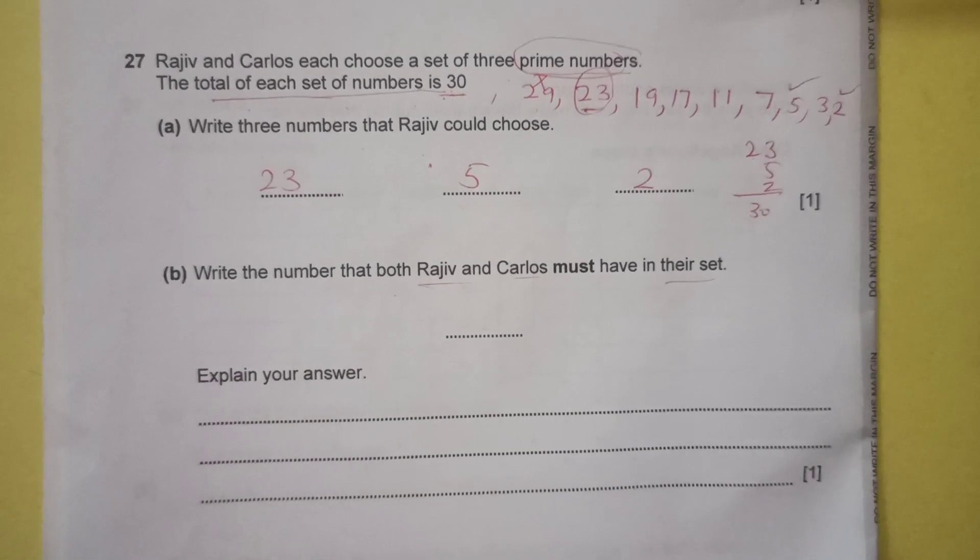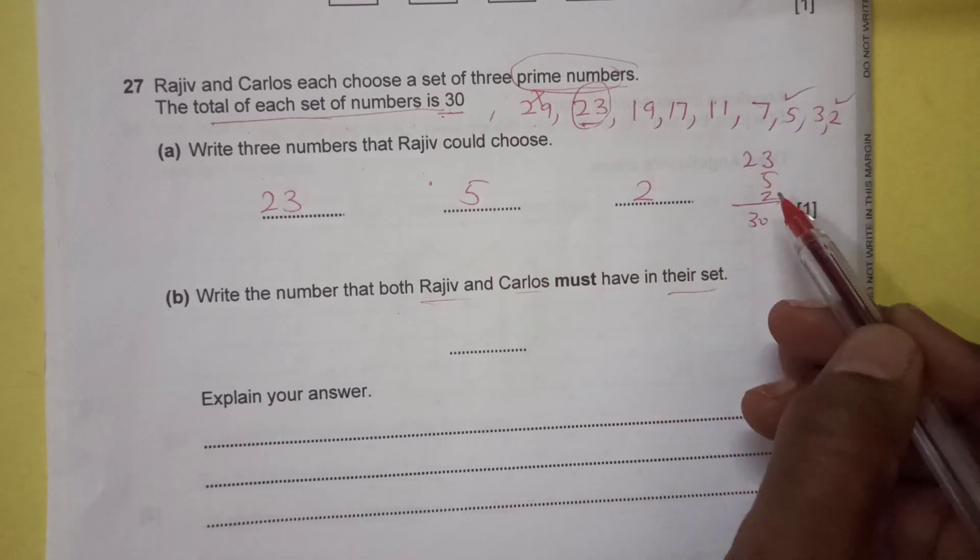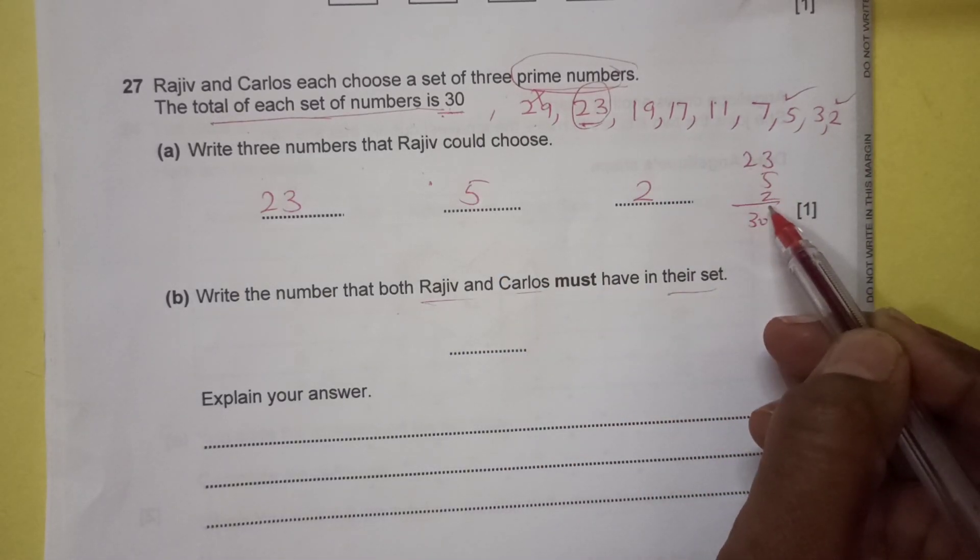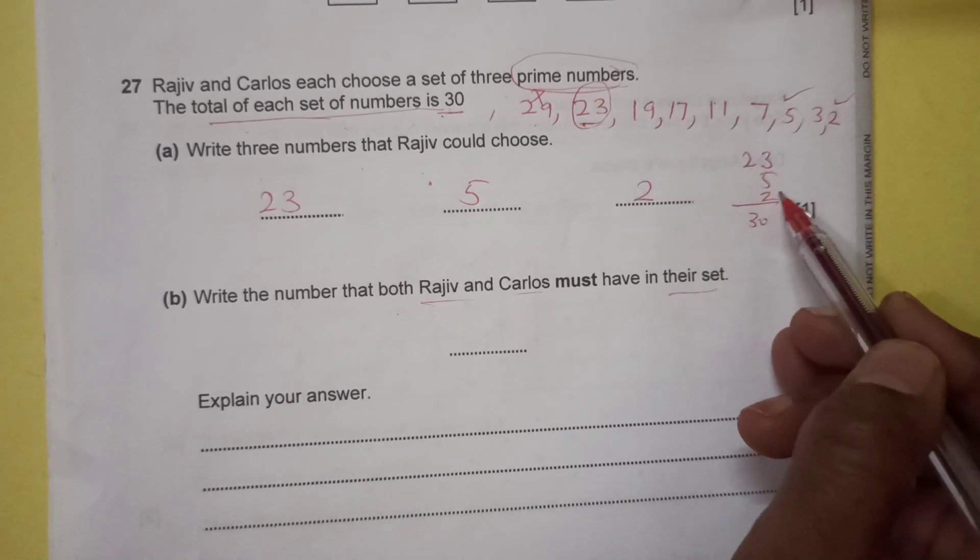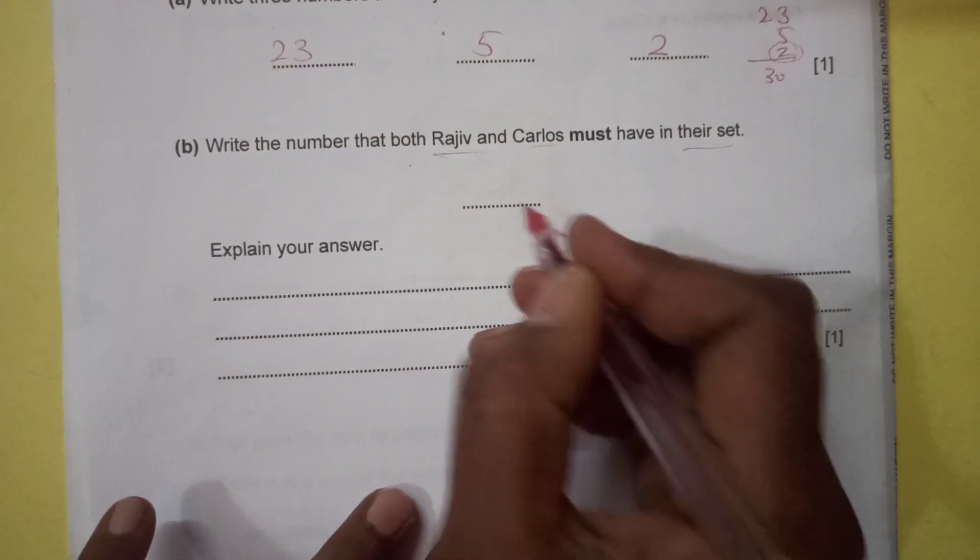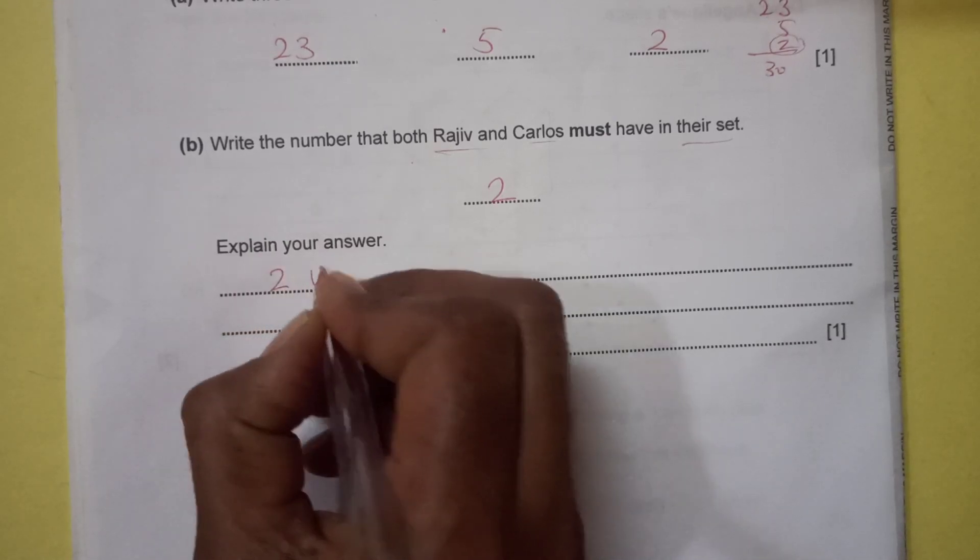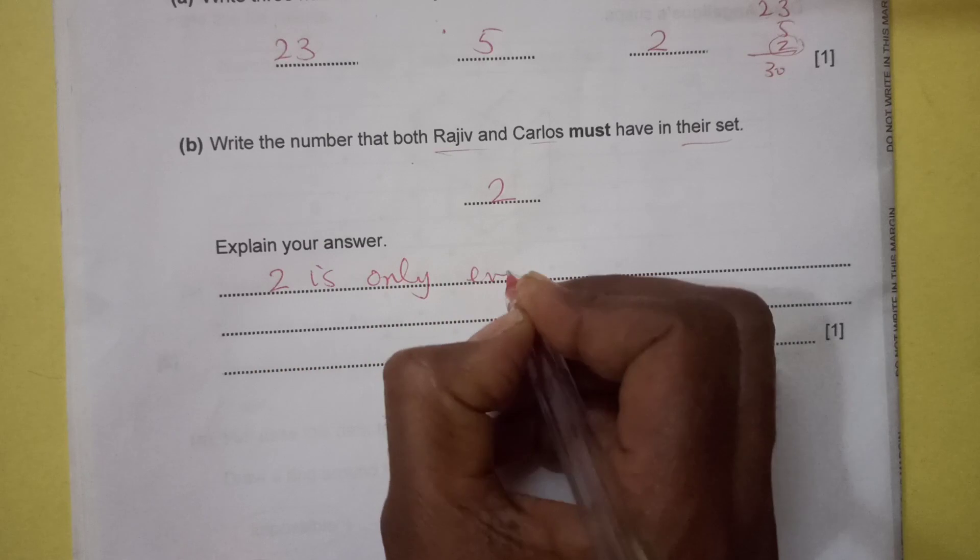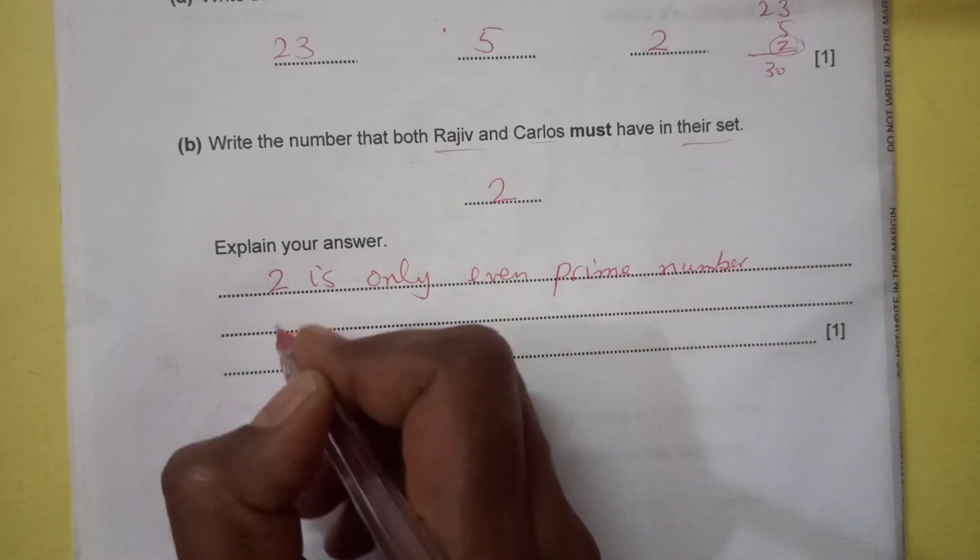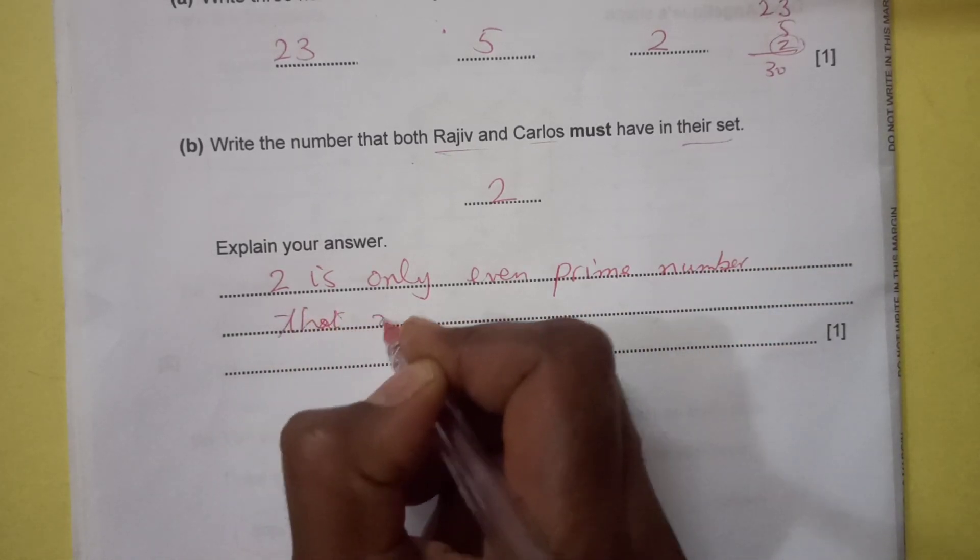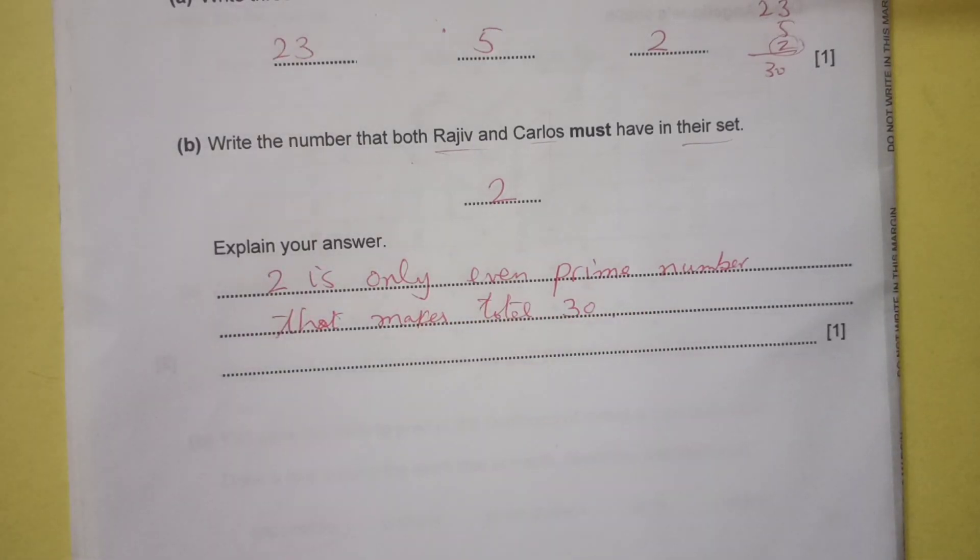Which number is a must here? You see, this total is 30. That means there is only one even number which is prime. If we add any odd number, the answer is going to be odd. So there is only one number which should be there, that is 2. We can say that 2 is the only even prime number that makes total 30.